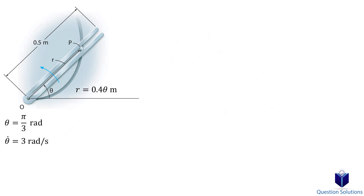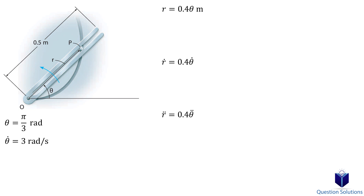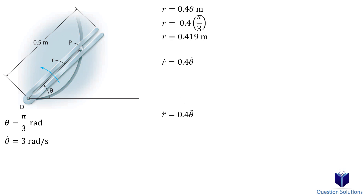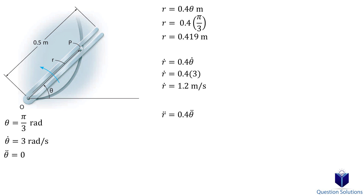We start with the first time derivative of our position equation — remember, the position equation here is not a constant. Then we take the second derivative. Next, we evaluate the values when theta equals pi over 3, and use the given angular velocity to find the first time derivative value. For the second time derivative, we need the angular acceleration, but since angular velocity is constant, its derivative is zero, making the second time derivative of the position equation zero.